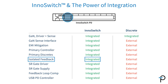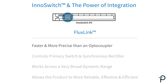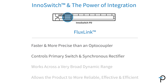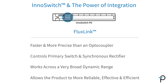That isolated feedback is critical. We call it FluxLink, and it's more than just a replacement for an optocoupler. The FluxLink is faster, it's more precise, and it allows us to do a much better job of controlling the primary switch and the synchronous rectifier in a way that works across a very broad dynamic range, and allows the product to be more reliable, more effective, and more efficient.